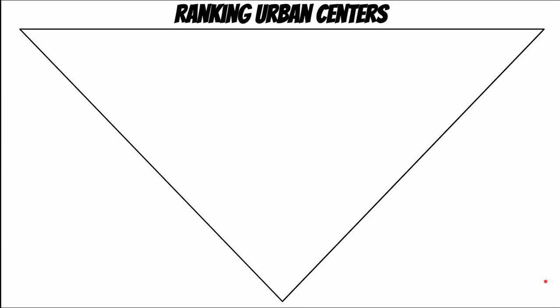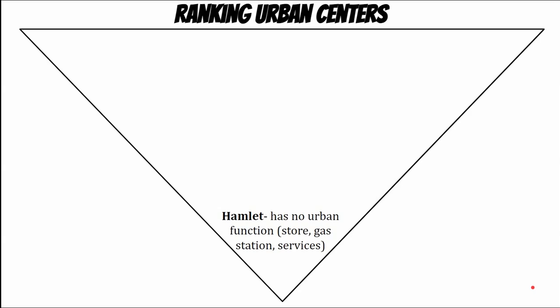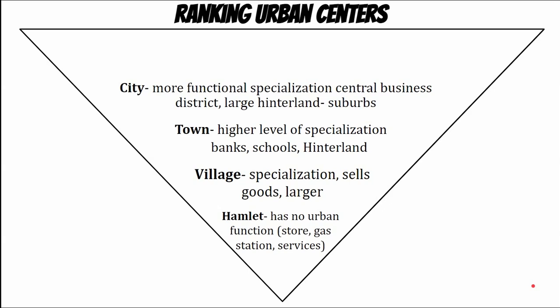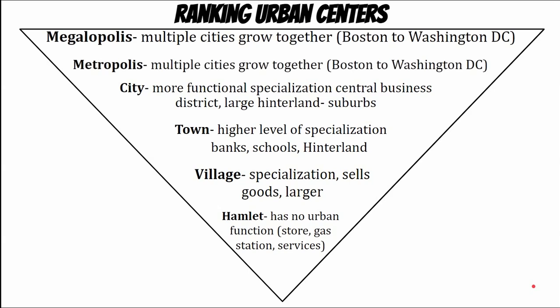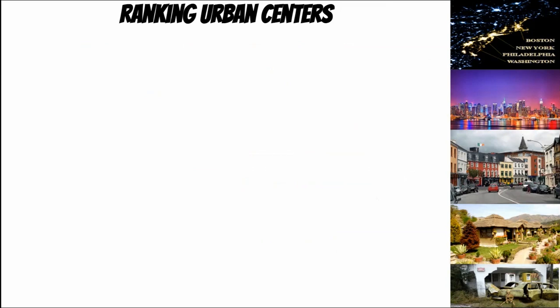So how do we rank the urban hierarchy? I use the upside-down triangle method — big at the top, small at the bottom. The smallest urban center is called a hamlet, which very few of these exist in most modern-day societies. Then you have a village, a town, a city, a metropolis, and then a megalopolis. These six different types of classifications are used to decide how large a city is and how important it is.